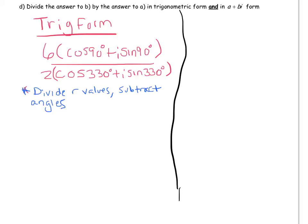So 6 divided by 2 is 3 and 90 minus 330 is negative 240 degrees. So our answer is 3 cosine of negative 240 degrees plus I sine negative 240 degrees.